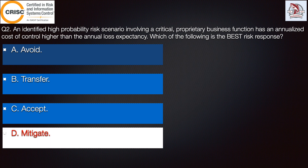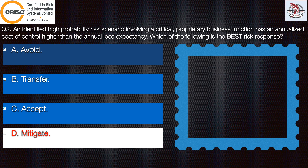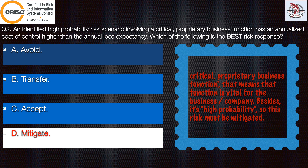Because, as the question mentioned, this involves a critical, proprietary business function — meaning the function is vital for the company. It is also a high probability risk, so the risk must be mitigated. The company cannot afford to have a loss on such a vital function, so it cannot simply accept the risk.